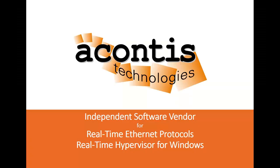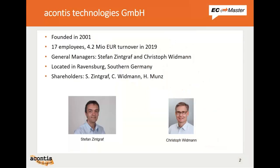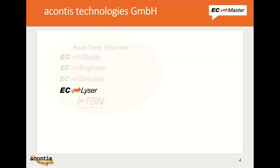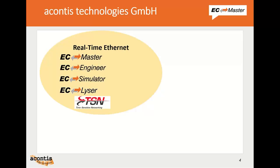Hello everybody, my name is Christoph Widmann, and I'd like to give you a brief overview about Acontis and our EtherCAT solutions. Acontis was founded almost 20 years ago by Stefan and myself as an independent software vendor. Today 70 people are working in our office in Ravensburg, and last year our revenue was about 4.2 million euros. The company is independent and privately owned. Our products are used worldwide, and Acontis sells its software products with the support of local partners to customers in America, Europe, and Asia.